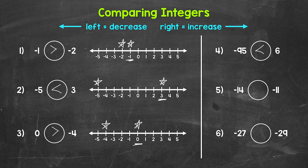Taking a look at number five, we have: negative 14 is greater than, less than, or equal to negative 11. So we have two negatives here. Which one is closer to zero? Which one is further to the right on a number line? Or thinking in terms of temperature, which is the warmer temperature? However we want to think about it, negative 11 is greater. So reading this from left to right, negative 14 is less than negative 11.